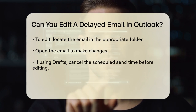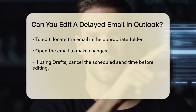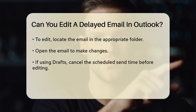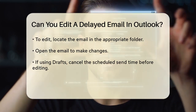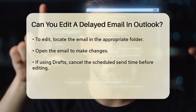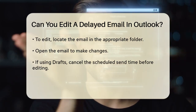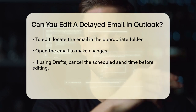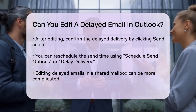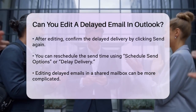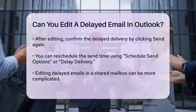On a Mac or using the online version, the process is similar. You'll find the email in the Drafts folder. However, you'll first need to cancel the scheduled send time before you can edit the content of the message. Once you've made your changes, you can reschedule the send time.